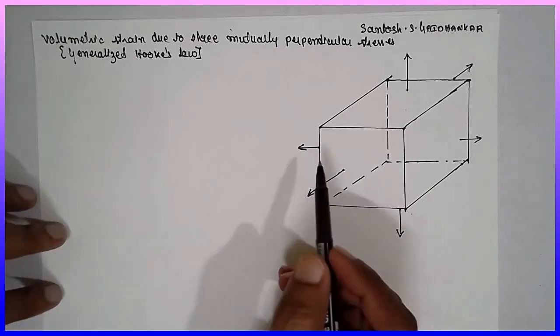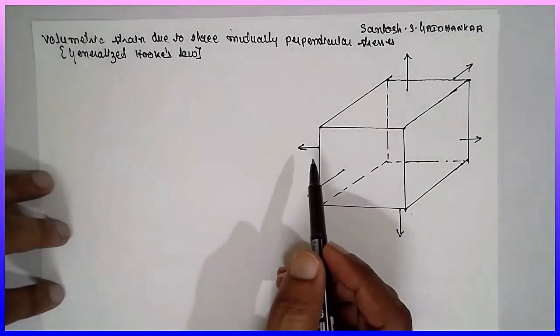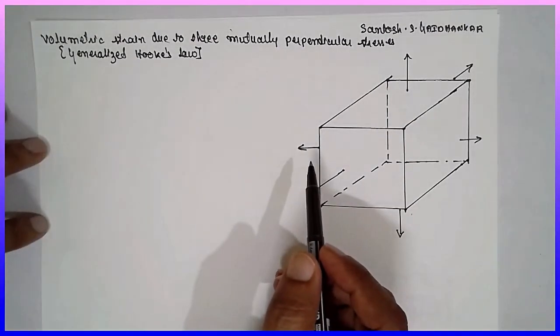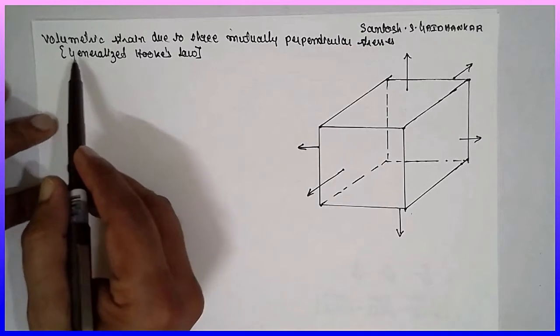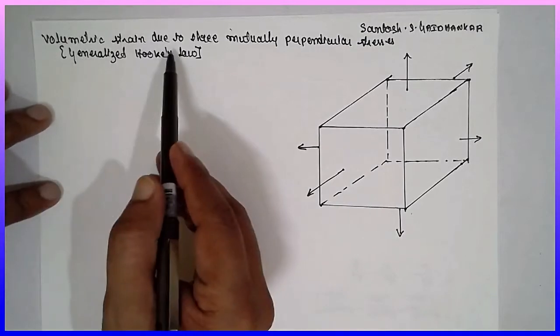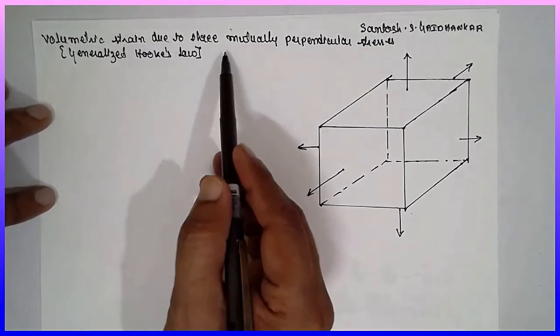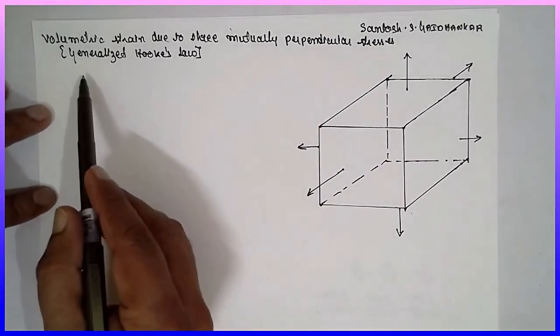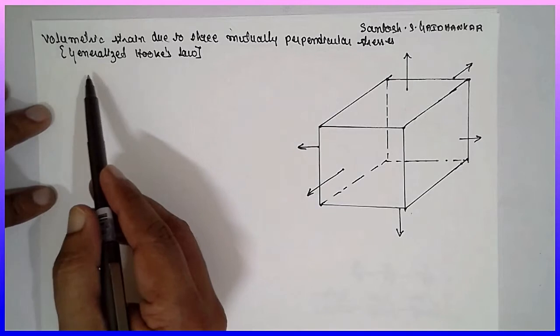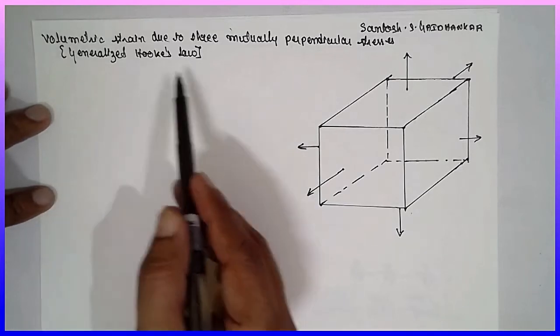I am Santosh Gairdhankar. Today I am teaching Mechanics of Material — specifically, volumetric strain due to three mutually perpendicular stresses, which we generally call the generalized Hooke's law.